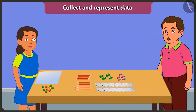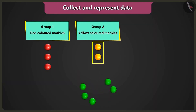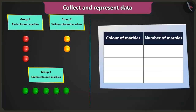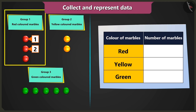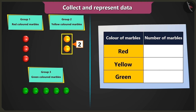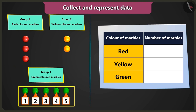Bubbly, first of all you have to make groups of same colored marbles — first group of red colored marbles, second group of yellow colored marbles, and third group of green colored marbles. Well done. Now create a table like this. Now count the number of marbles in each group. There are three red marbles in the first group, two yellow marbles in the second group, and five green marbles in the third group.